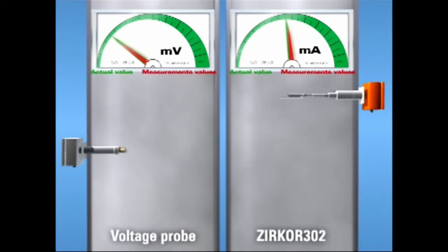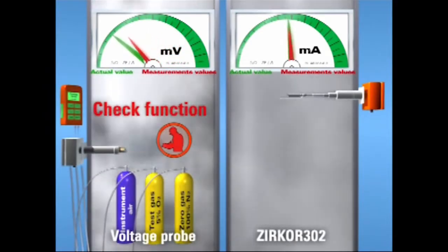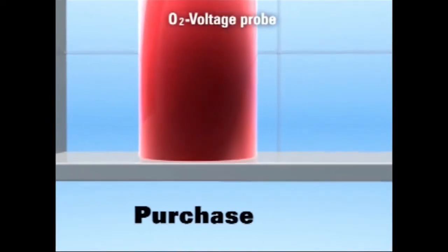The check function and calibration of the voltage probe is carried out manually or semi-automatically with air and two different test gases. A fully automatic calibration is expensive due to the required test gas.